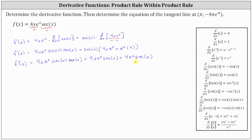Let's go ahead and factor out the greatest common factor. Notice all three products have a factor of four, a factor of e to the x, and a factor of secant x. We can write f prime of x as four e to the x secant x times the quantity x tangent x plus x plus one.